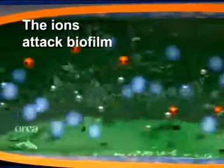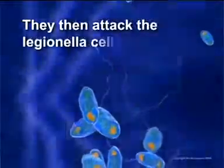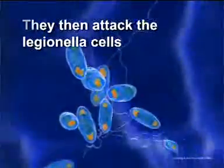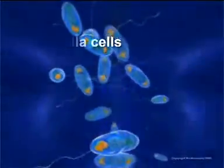The green flakes represent parts of biofilm being attacked and eventually removed by the copper and silver ions. The Legionella bacteria, hiding in biofilm, are also attacked and destroyed by the ions.